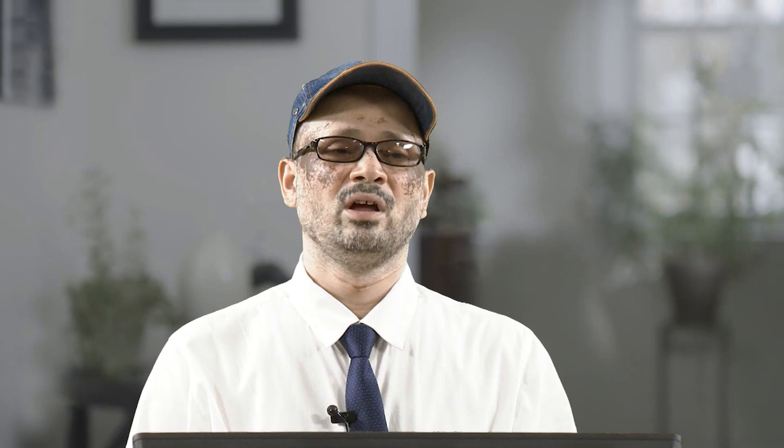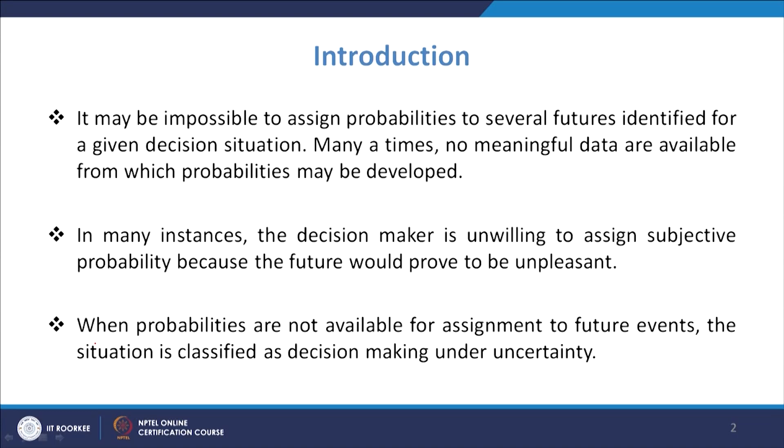However, many times these probability values are not given. It may be impossible to assign probabilities to several futures identified for a given decision situation. In our earlier example, the firm could get contract C1, C2, or both C1 and C2, with probabilities 0.2, 0.3, and 0.5. But many times no meaningful data are available from which probabilities may be developed.